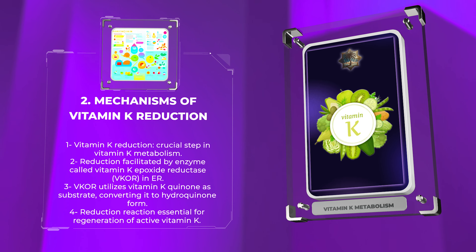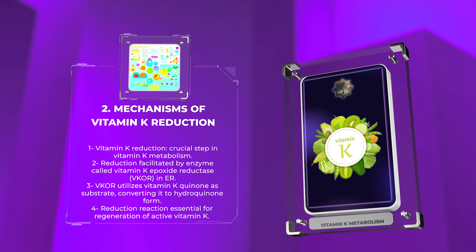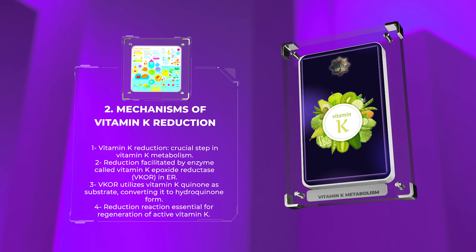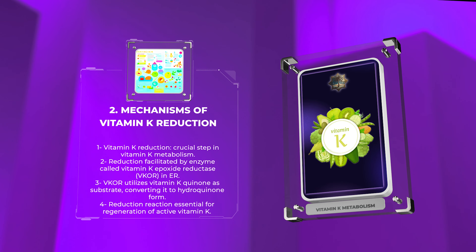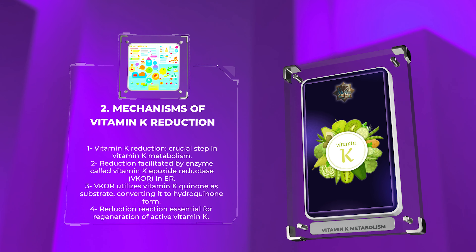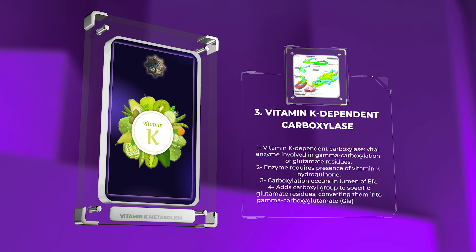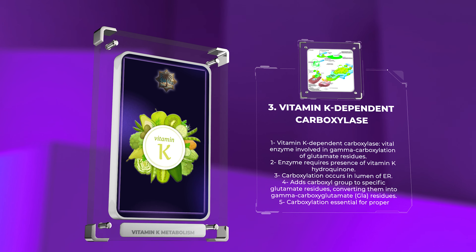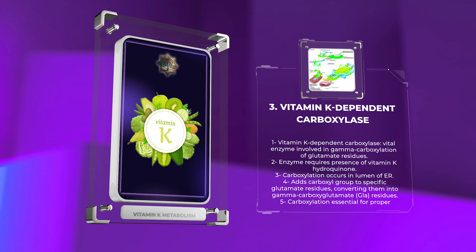Vitamin K-dependent proteins, also known as gamma-carboxyglutamic acid (GLA) proteins, play essential roles in blood coagulation and bone metabolism. The biosynthesis of these proteins begins with the conversion of dietary vitamin K or vitamin K derived from intestinal bacterial synthesis into its active form, vitamin K-hydroquinone. Once in its active form, vitamin K gets incorporated into the endoplasmic reticulum (ER), where it acts as a cofactor for the gamma-carboxylation of specific glutamate residues within the GLA proteins. This gamma-carboxylation process is catalyzed by the vitamin K-dependent carboxylase enzyme, which we will discuss in detail in the next topic.